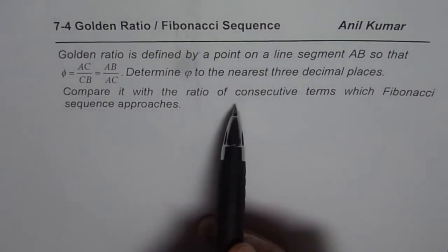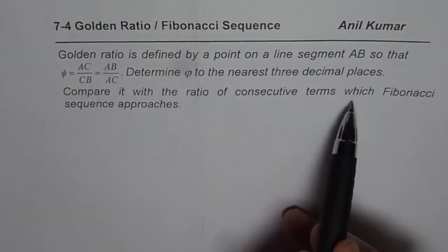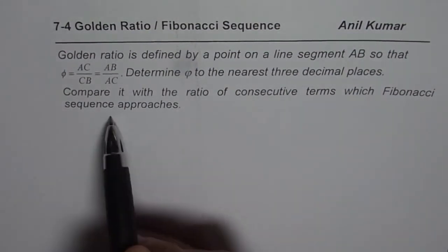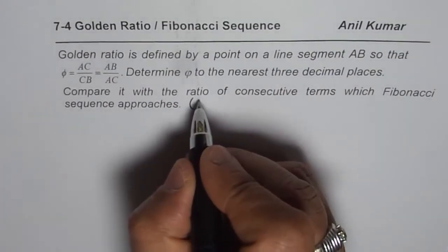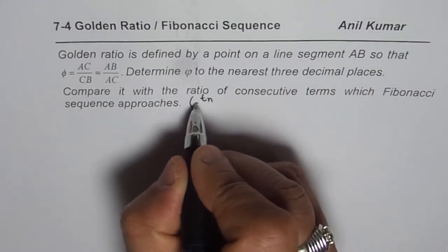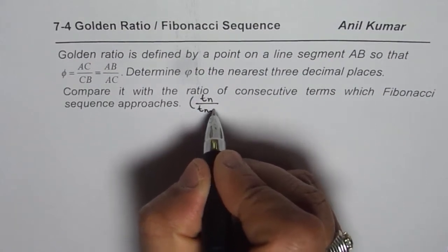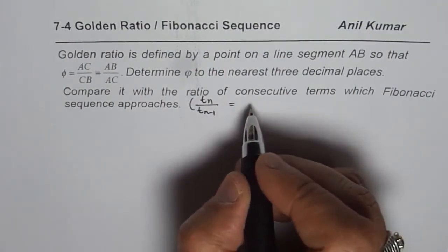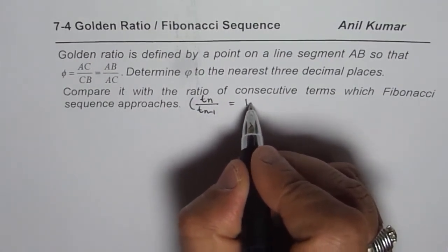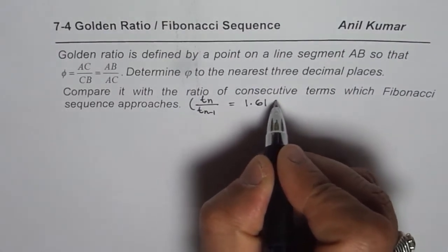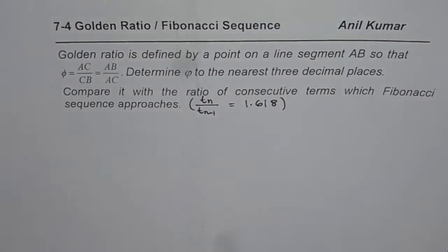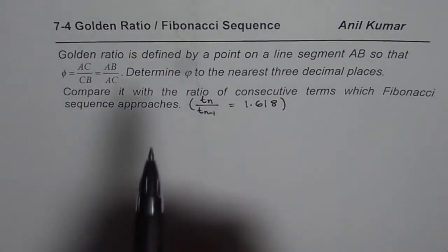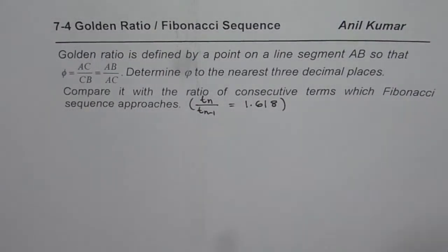Compare it with the ratio of consecutive terms which Fibonacci sequence approaches. Now that ratio which we calculated between TN divided by TN minus 1, it approaches a value which is 1.618. We did it for 12 terms and that is the value which we got. Now we will explore what golden ratio is and see the relation between the two.